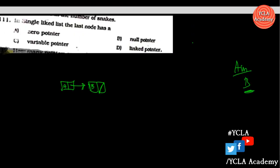For a singly linked list, the last node contains a null pointer. Different books may follow a different approach, but the standard answer is that the last node points to null.